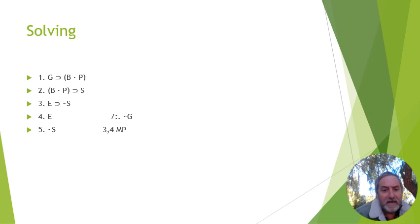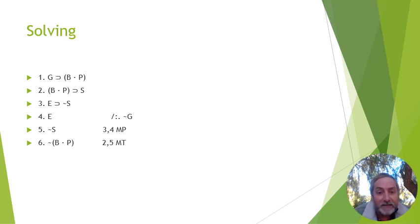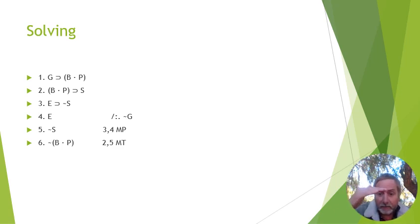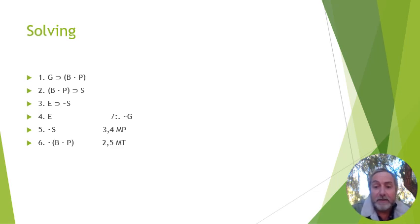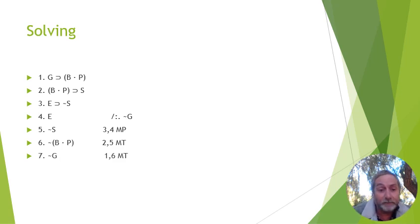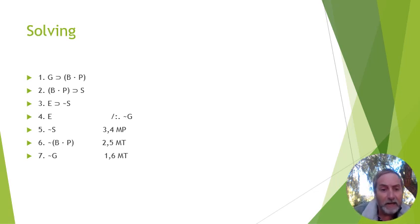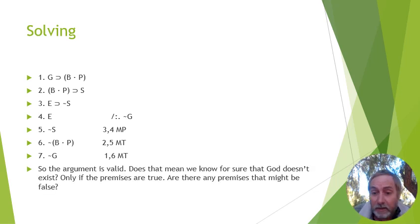So the first move: lines 3 and 4, MP — I can conclude not-S on line 5. Then, feeding not-S into line two: lines 2 and 5, MT — I get not-(B and P) on line 6. When you do your proofs, write the new statement you derived and on the right write your justification — the rule and the premise numbers required. MP and MT each require two premises; simplification only requires one.